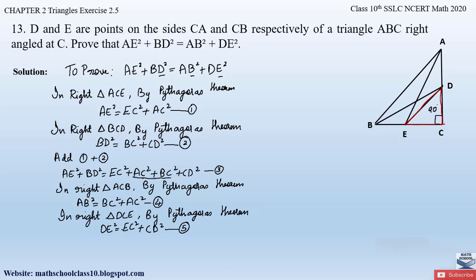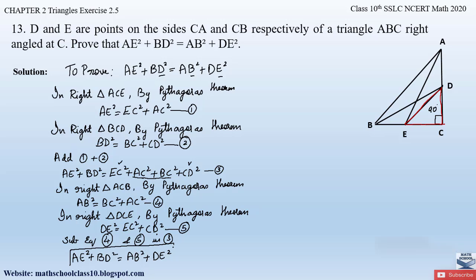From equations 3 and 4 we have the values of AB² and DE², which form the right-hand side of what we have to prove. AB² = BC² + AC², and DE² = EC² + CD². Now substituting equations 3 and 4 into our combined result: the left-hand side AE² + BD² = (BC² + AC²) + (EC² + CD²) = AB² + DE². Hence we have proved that AE² + BD² = AB² + DE².